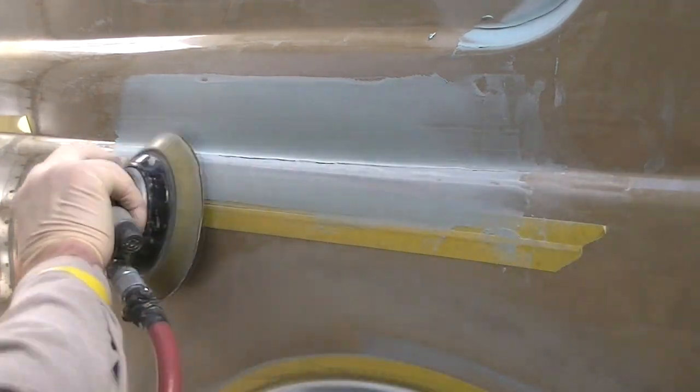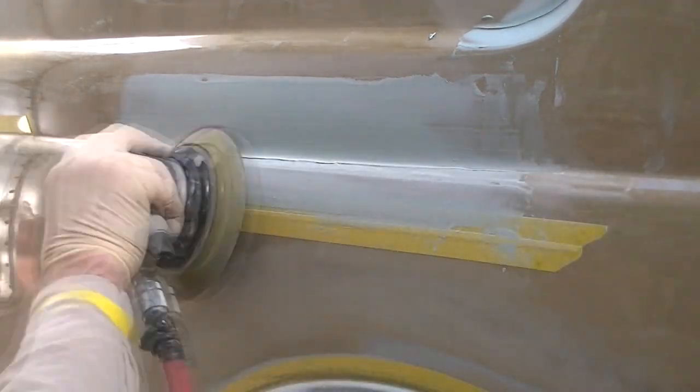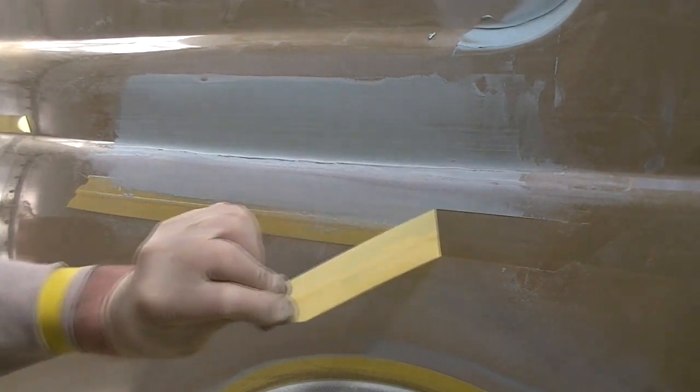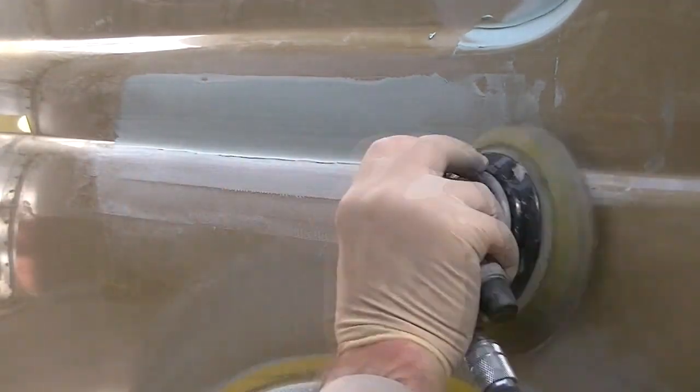And now I'm going to buzz that down with the standard finish DA and just knock it down lightly with 180 grit. Don't want to take too much off of it. Just smoothing it down. I'm removing the tape so I can smooth it down into the paint. Got a little line there from the tape. And we'll just buzz that down real quick. I don't want to take any of the paint off of the vehicle unnecessarily that I don't need to remove for repairs.